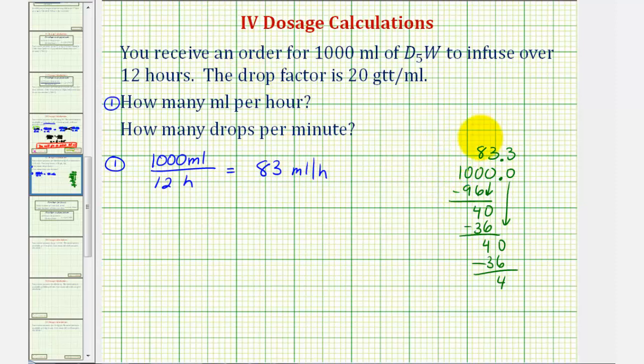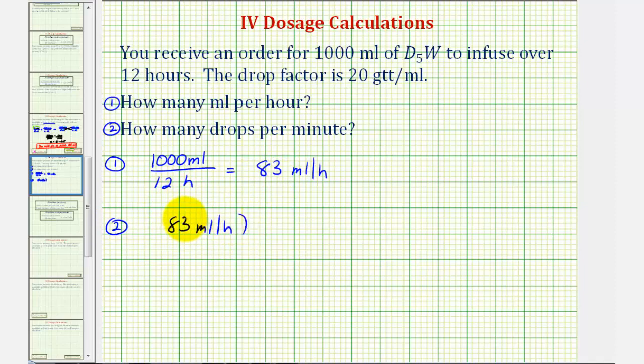Now that we have the flow rate in milliliters per hour, we can find the drops per minute. To find the drops per minute, we'll start with the flow rate in milliliters per hour, so we'll have 83 milliliters per hour, times the drop factor, which is 20 drops per minute, and we'll divide this by 60 minutes per hour.